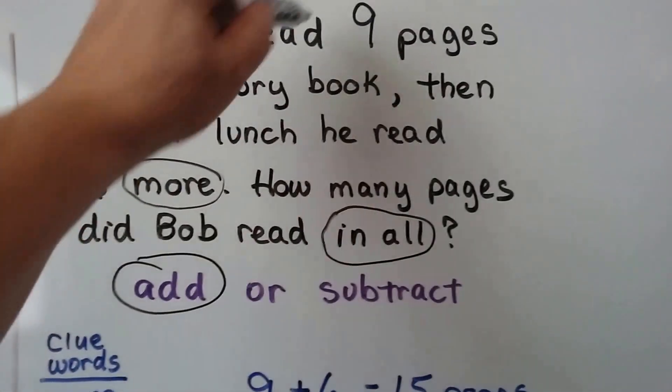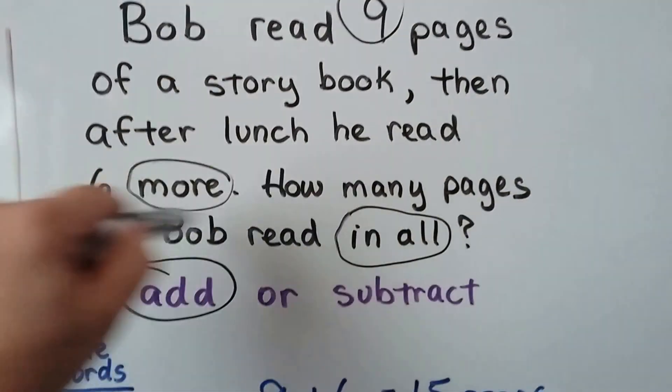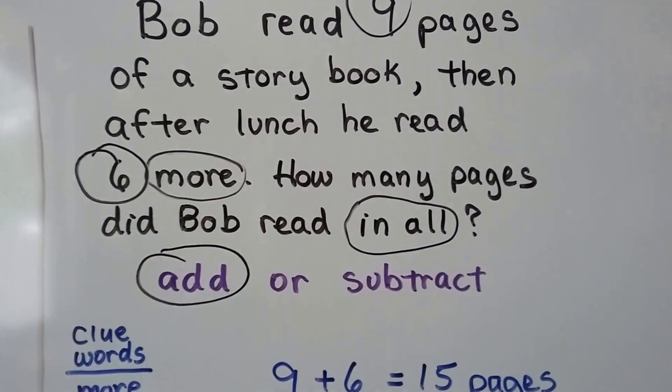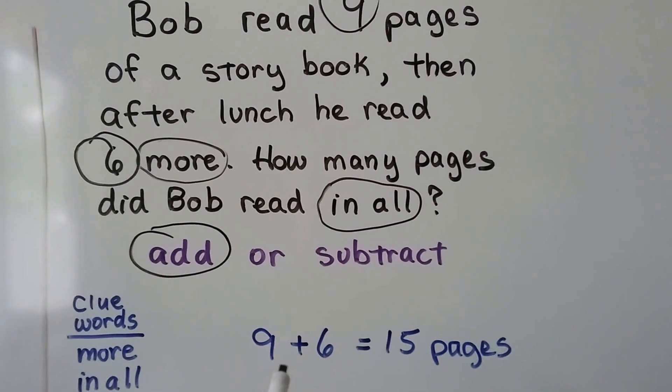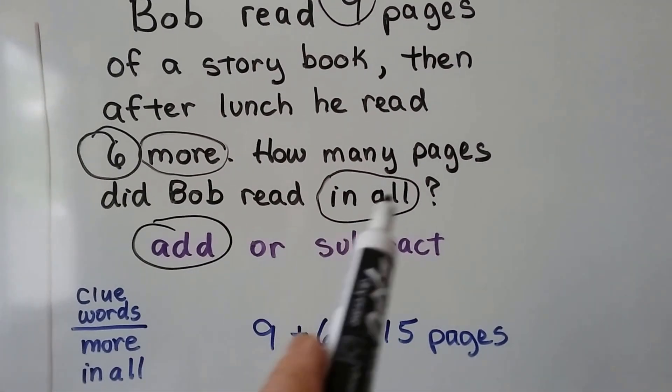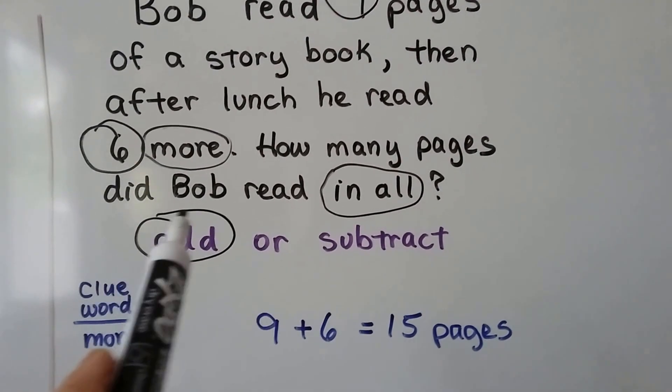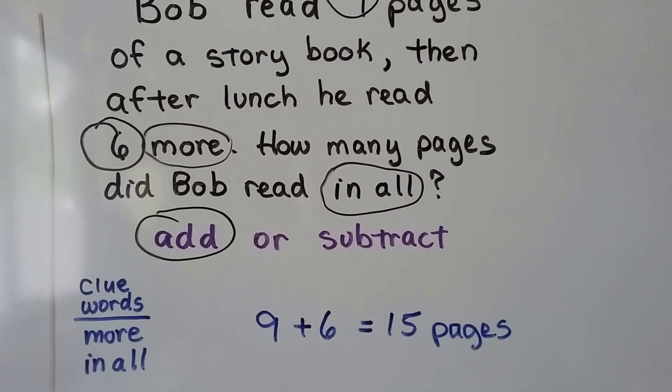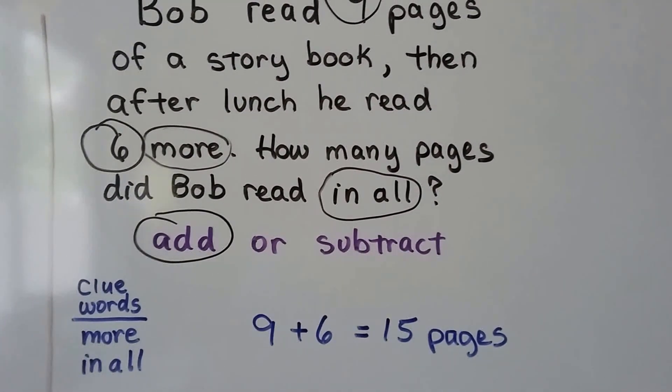so we're going to need to add. And our important numbers are nine and six. So we need to add nine and six. Nine plus six equals fifteen. And it asked us how many pages did Bob read, so we write fifteen pages. So we can label our answer.